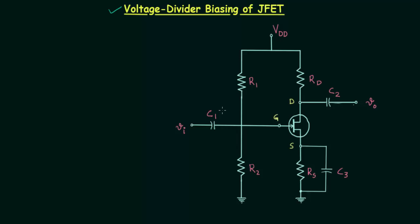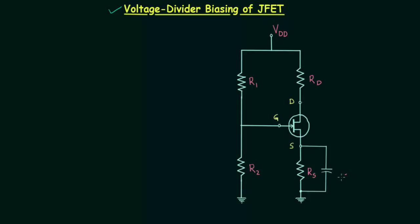You can see three capacitors in the network: C1, C2, and C3. C1 and C2 are coupling capacitors and C3 is the bypass capacitor. As we already know, we can open-circuit the three capacitors in the case of a DC signal, so we will open them and simplify this circuit.